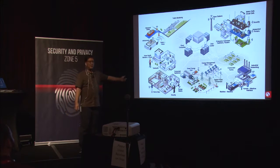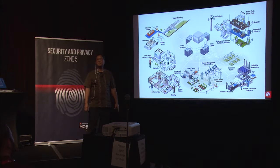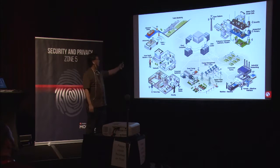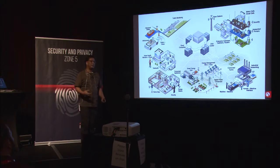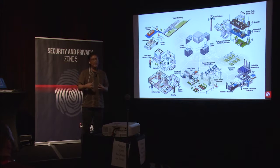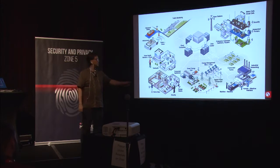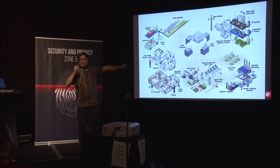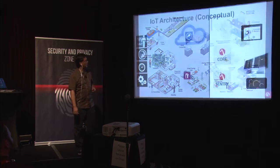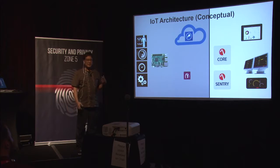The Internet of Things can touch every vertical — everything from health to your home to vehicles. There has to be a way for all this information to be gathered from all the sensors through a managed computer — in this case the Raspberry Pi — and then uploaded to the big data cloud computing central monitoring station. That's what we're conceptually trying to achieve.